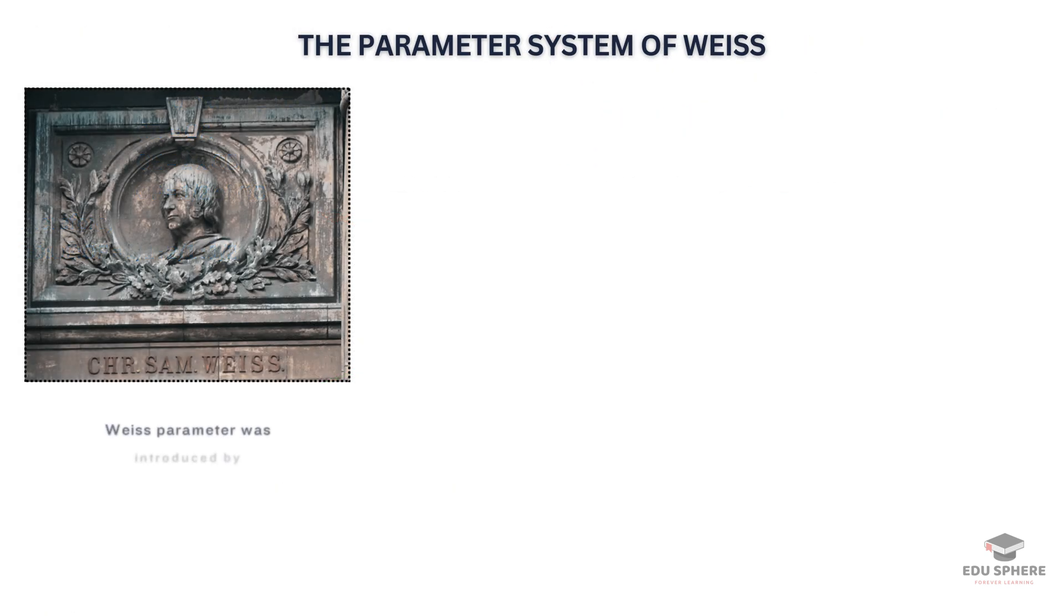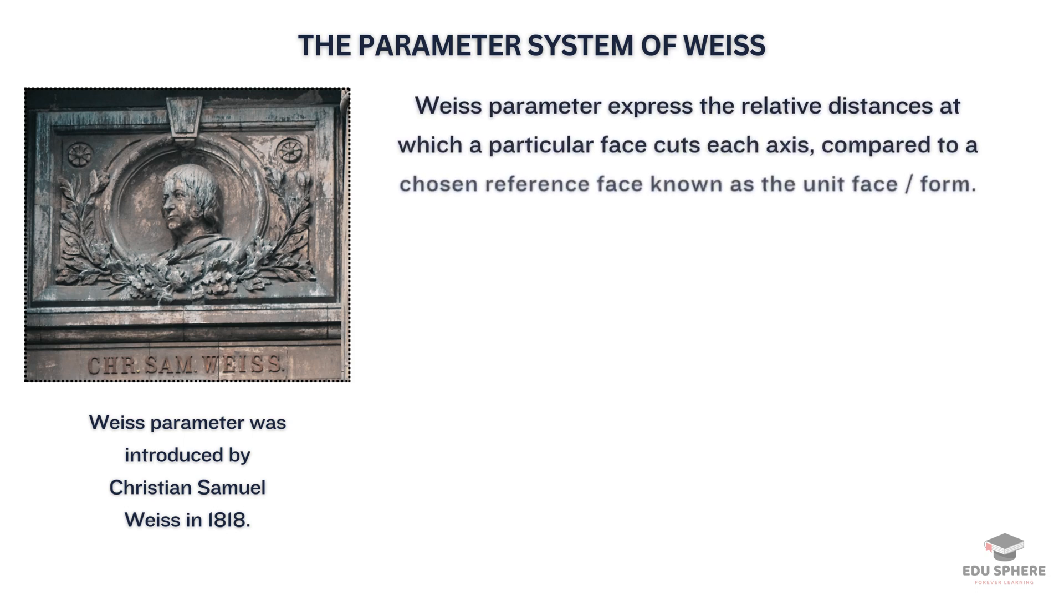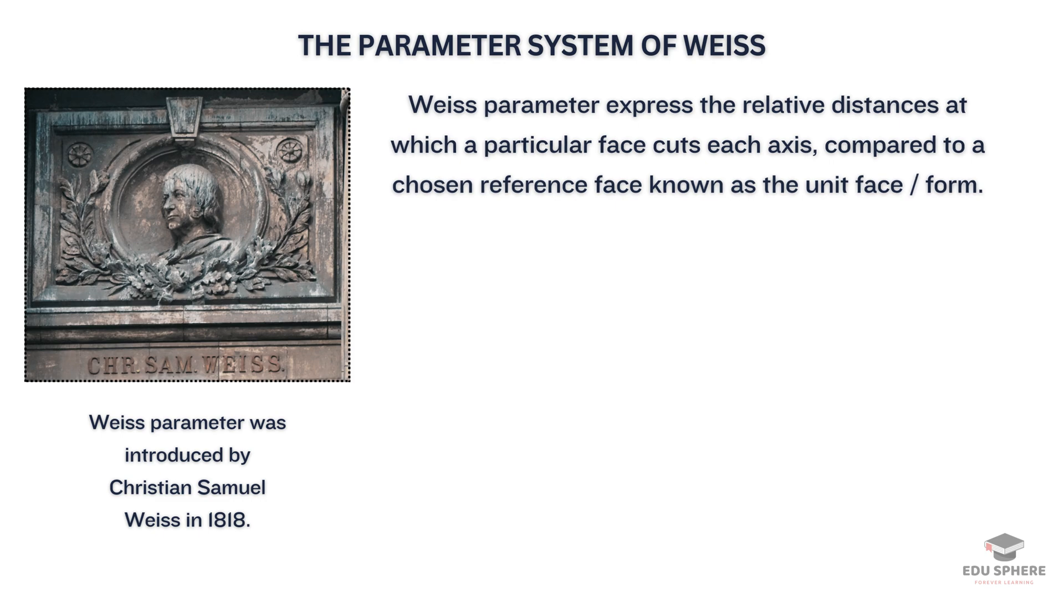Weiss parameters were introduced by Christian Samuel Weiss in 1818. It is a fundamental tool in crystallography, providing a way to quantify how a crystal face intersects the crystallographic axes. They essentially express the relative distances at which a particular face cuts each axis compared to a chosen reference face known as the unit face or form.